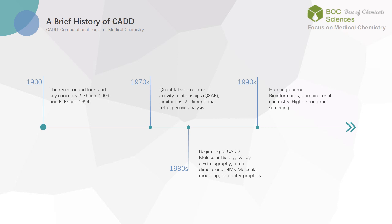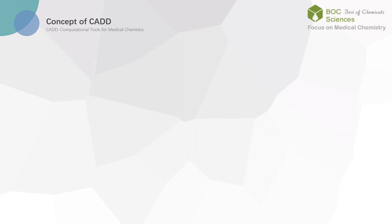Computer-aided drug design has made great progress in recent years, and has already transitioned from the research of basic theory to the stage of practical application. Various computer-aided drug design drugs involved in the design have been listed or entered the clinical research stage. Computer-aided drug design is a method of designing and optimizing lead compounds based on computer chemistry, through computer simulations, calculations, and estimating the relationship between drugs and receptor biomacromolecules. Using this new technology, drug design from both biochemical and receptor aspects is the trend of new drug design.